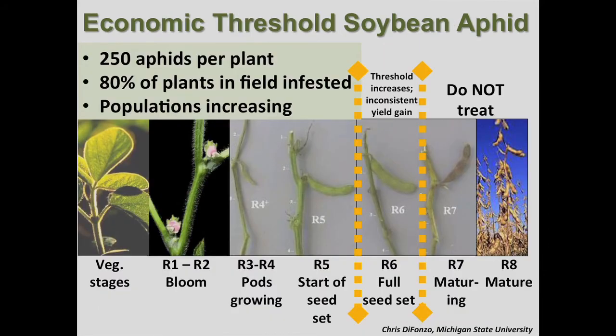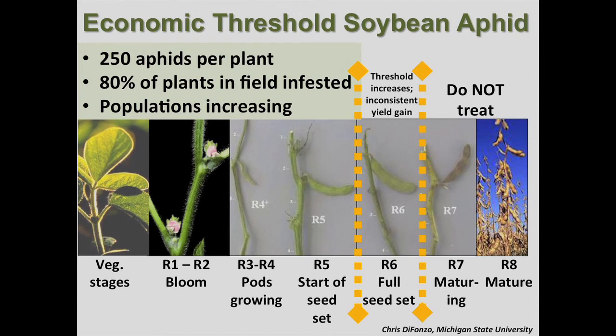For sampling, begin when the crop is in the late vegetative stage. Typically in North Dakota that's mid to late June. Then continue sampling all the way up through R5, which is the early seed set.